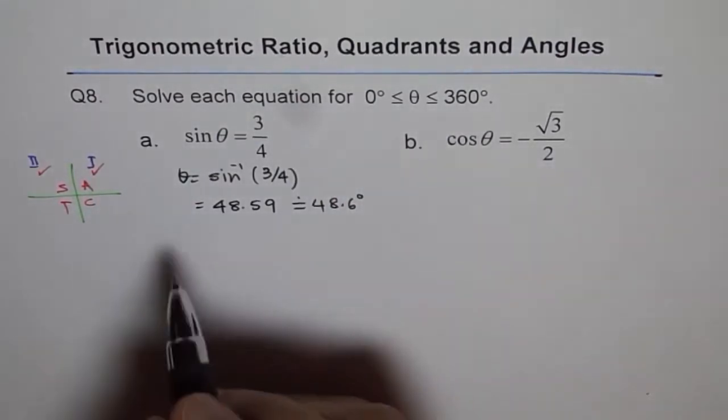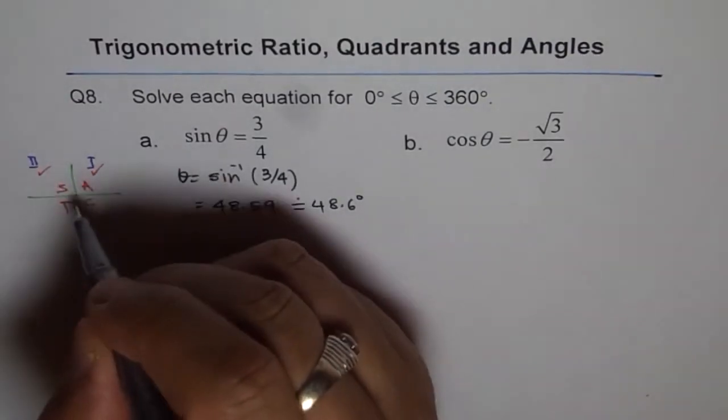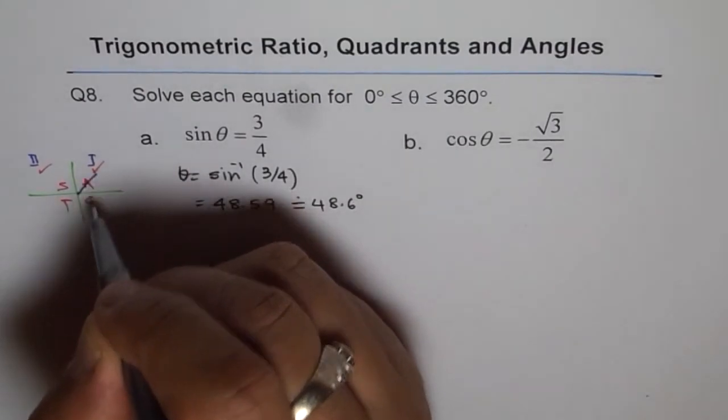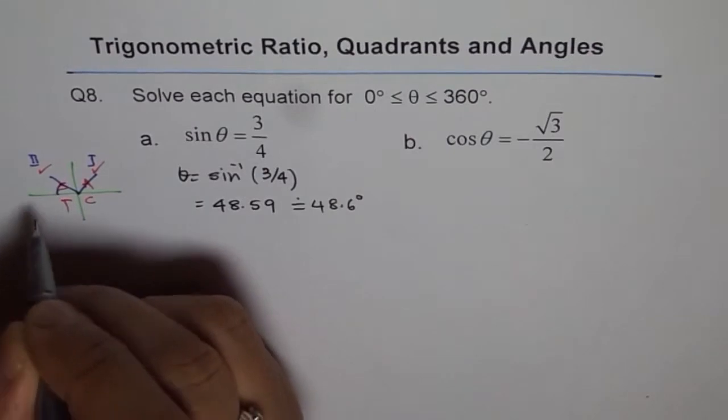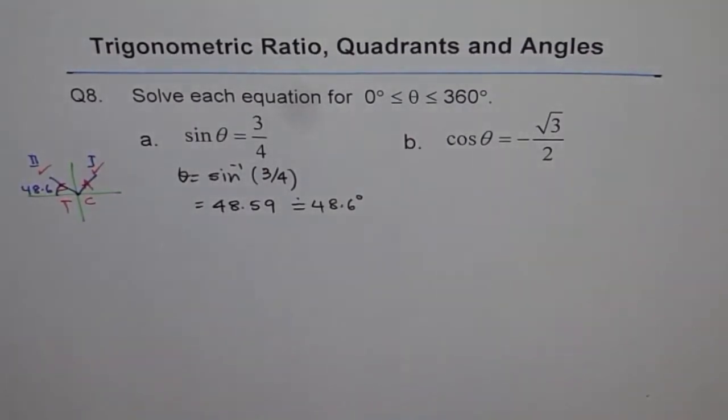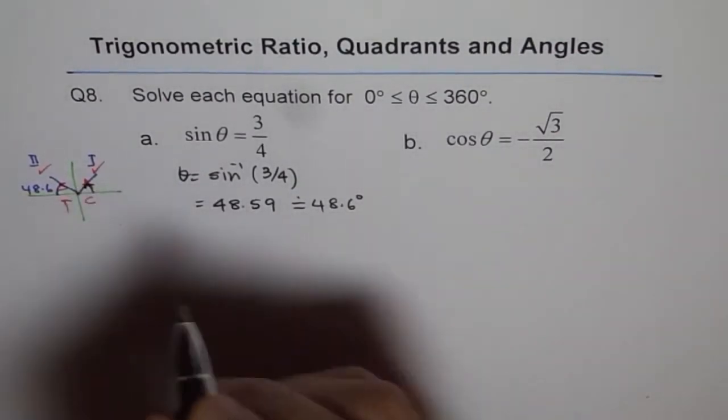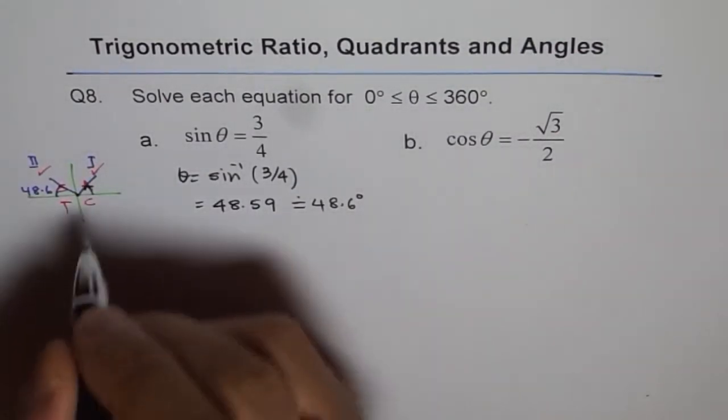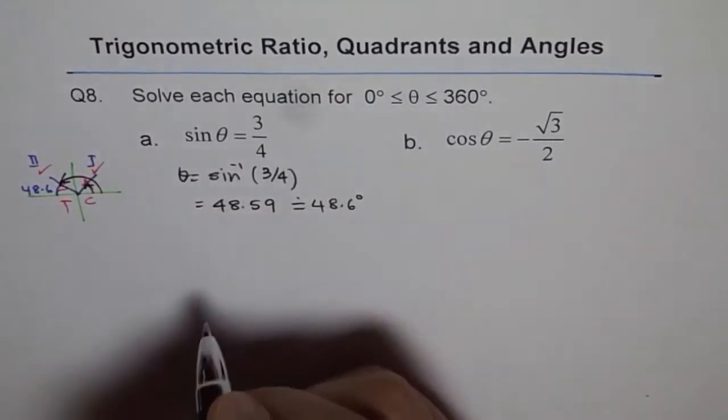So that is our related acute angle 48.6 in quadrant 1. Similarly, we have another one which will be 48.6 from here. But the solution is the principal angle. So one principal angle is 48.6 which is this and the other one is 180° - 48.6°.